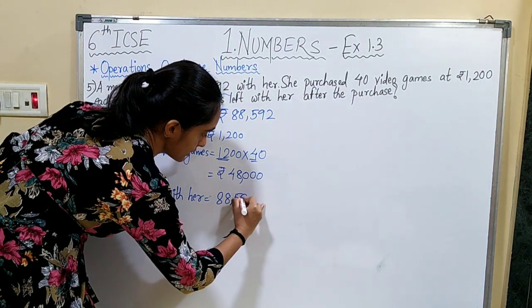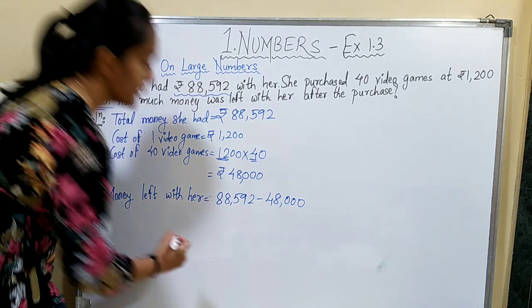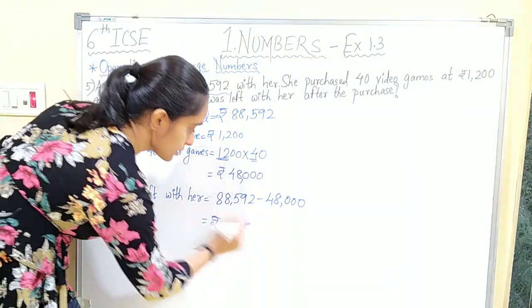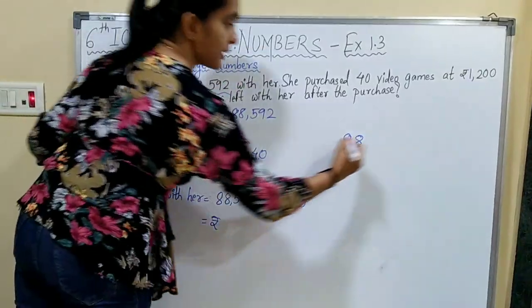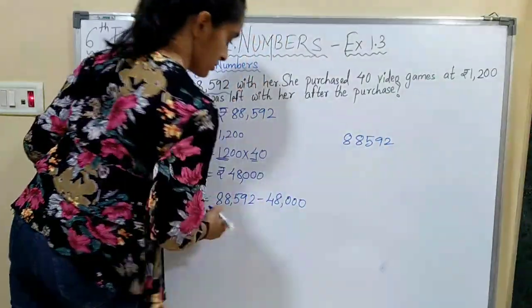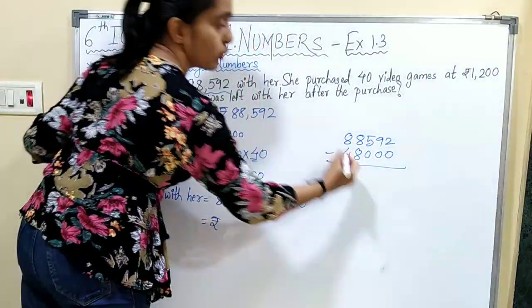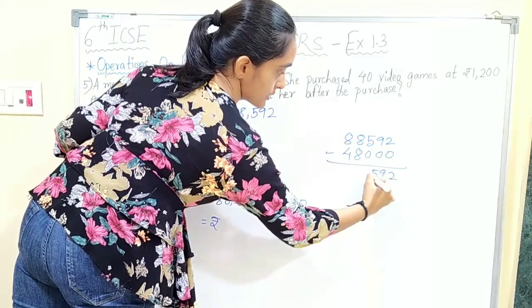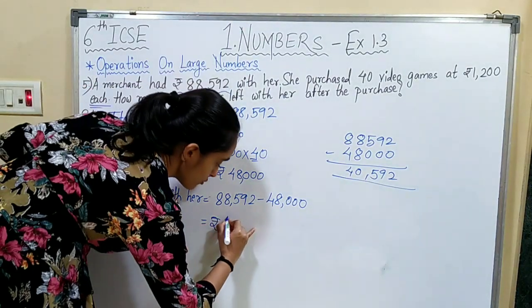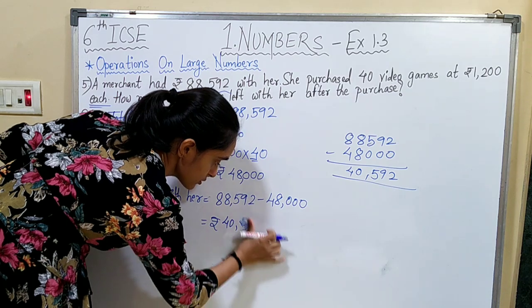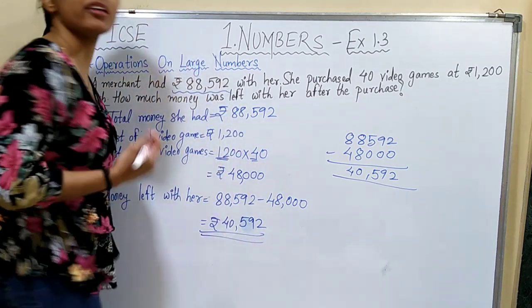So 88,592 minus 48,000 gives Rs. 40,592. Therefore, Rs. 40,592 is the amount left with her in the end.